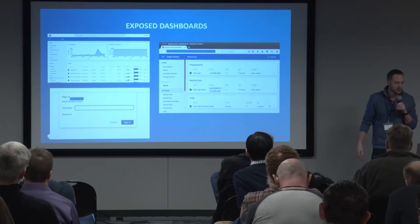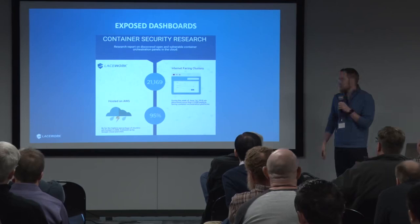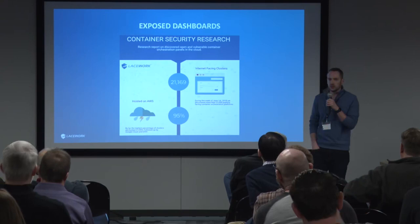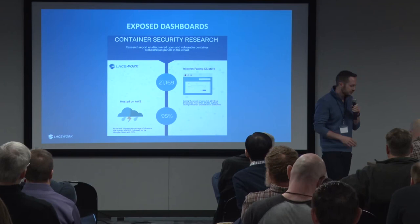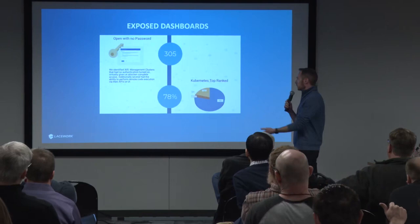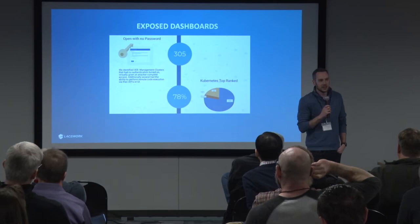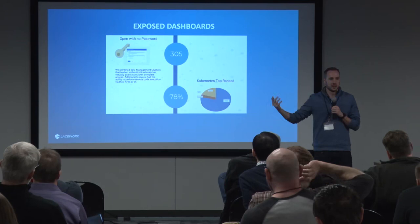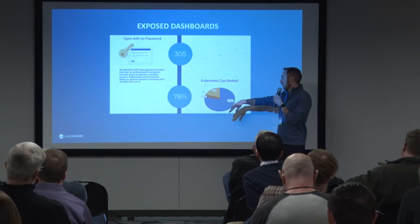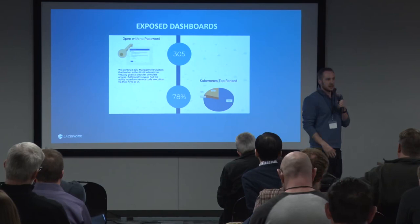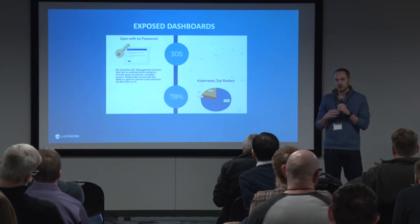Our high-level findings: we saw about 21,000 internet-facing orchestration systems. About 95% were on AWS — not because AWS is less secure, but it's the most popular platform. Most interestingly, 305 of them were identified without any password protection. And of all orchestration systems we found — including Mesos Marathon — 78% were Kubernetes. Since we did this in July last year, I guarantee that number would trend upward if we ran the search today.